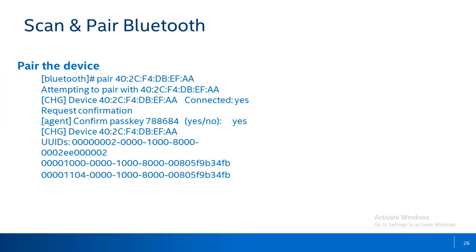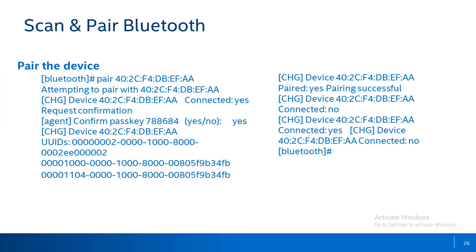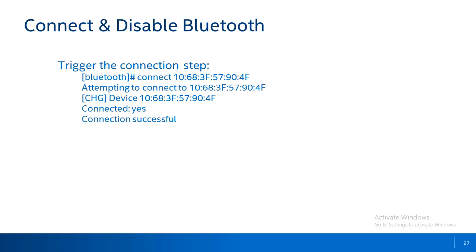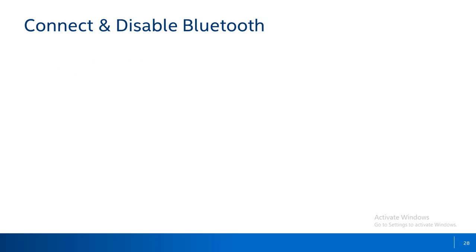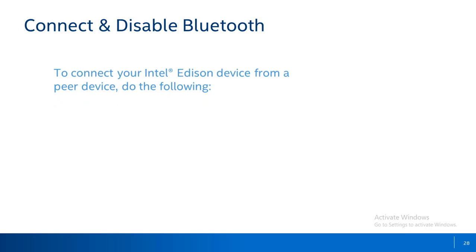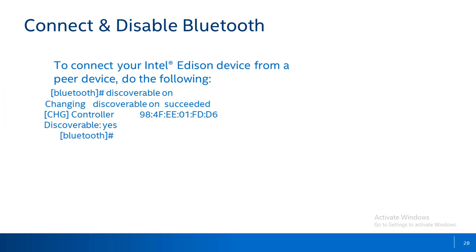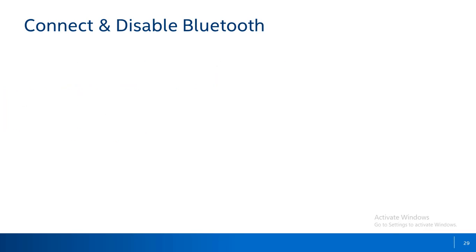For successful implementation of the connection, a passkey must be accepted by both parties. You can then connect your built-in Bluetooth with the target device as shown. To make your built-in Bluetooth visible to other devices, use the command as shown. When the Bluetooth connection is no longer needed, you can exit using the command shown.